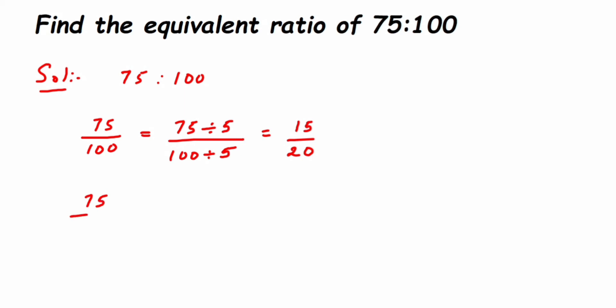Now one more example using multiplication. When finding an equivalent fraction or equivalent ratio, you can multiply with any number — there's no restriction. But when dividing, like in the case of 75 upon 100, you cannot divide by just anything like 7 or 8. You have to make sure both numbers are divisible by that specific number. Now I'm going to multiply by 2.